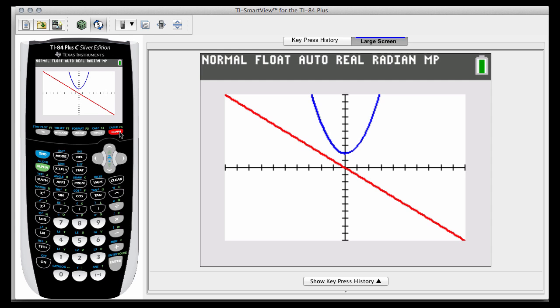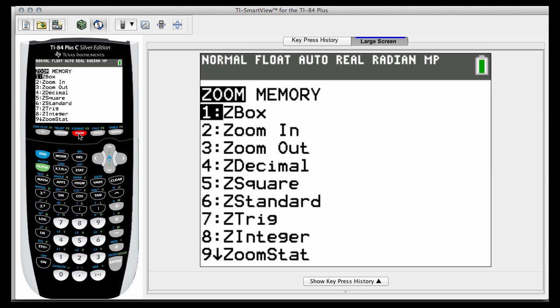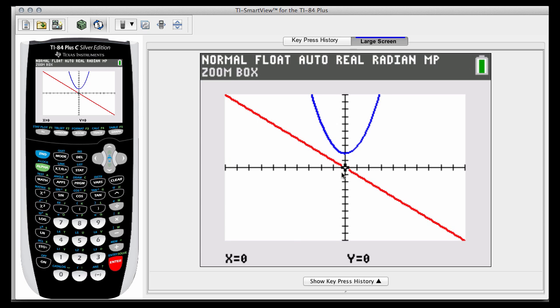Remember we're only concerned with the region going from x equals 0 to x equals 1, so it might be helpful if we can zoom in a little bit on that region. A great way to do that is zoom box. If you hit your zoom button, you'll notice that first one says z box, so hit enter. You'll notice your little cursor blinking at you. What you're going to do is essentially create a box, a frame around the part that you want to focus on.